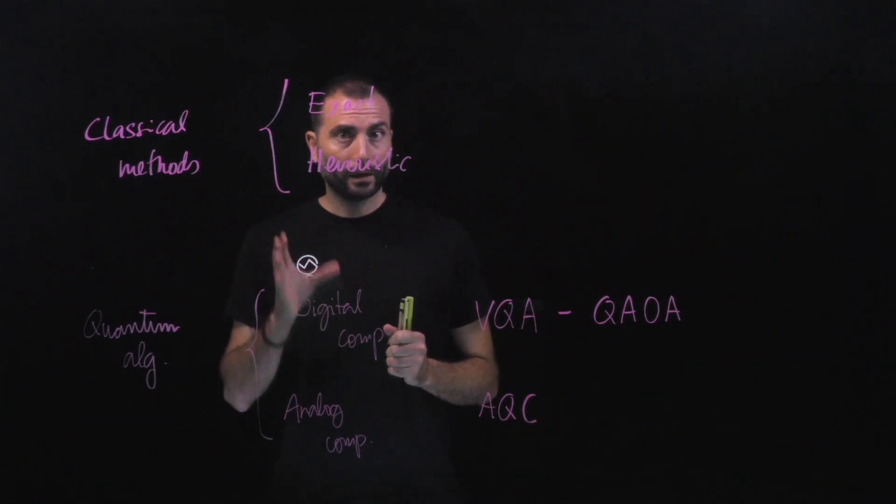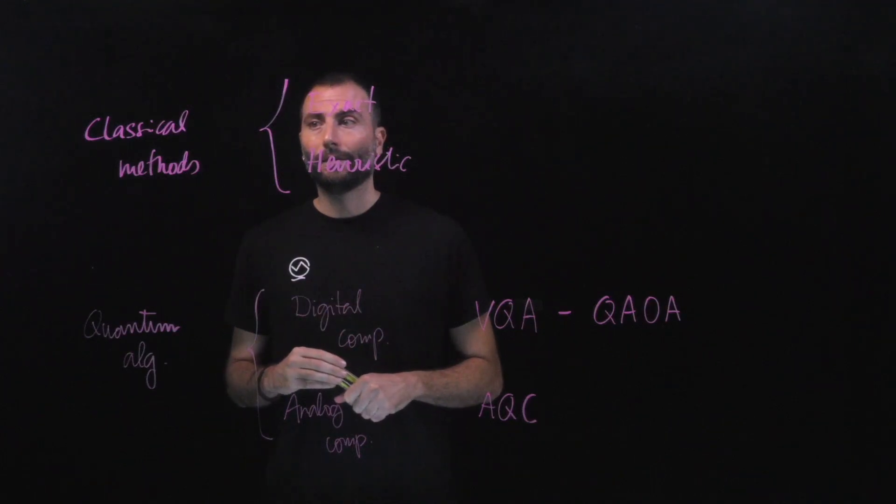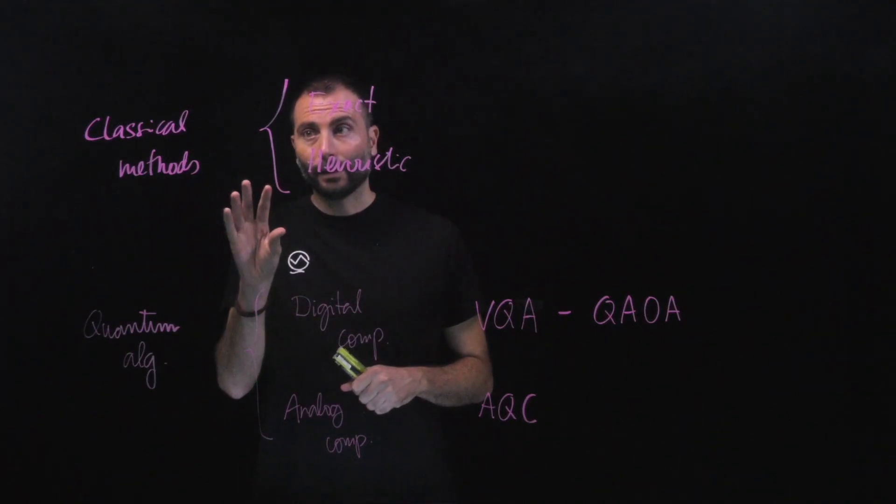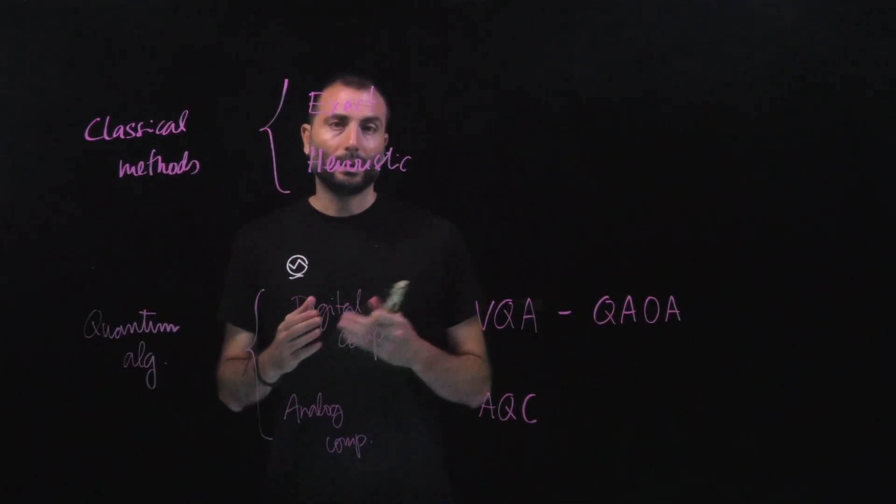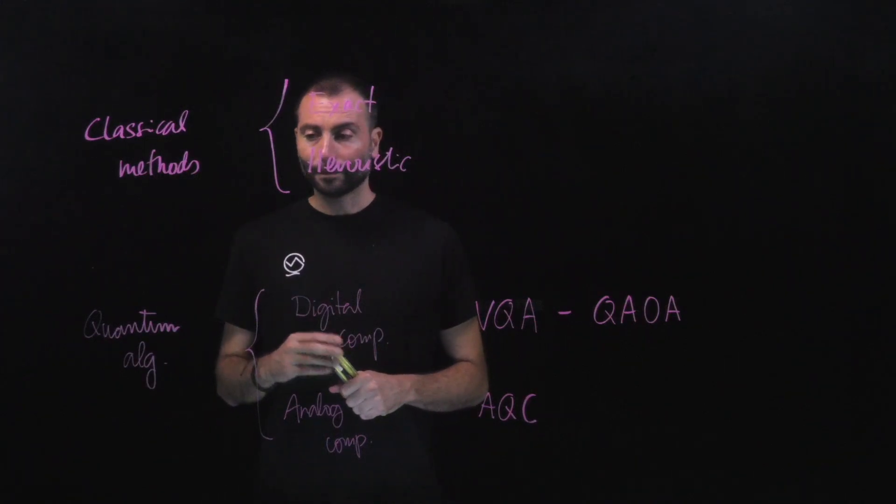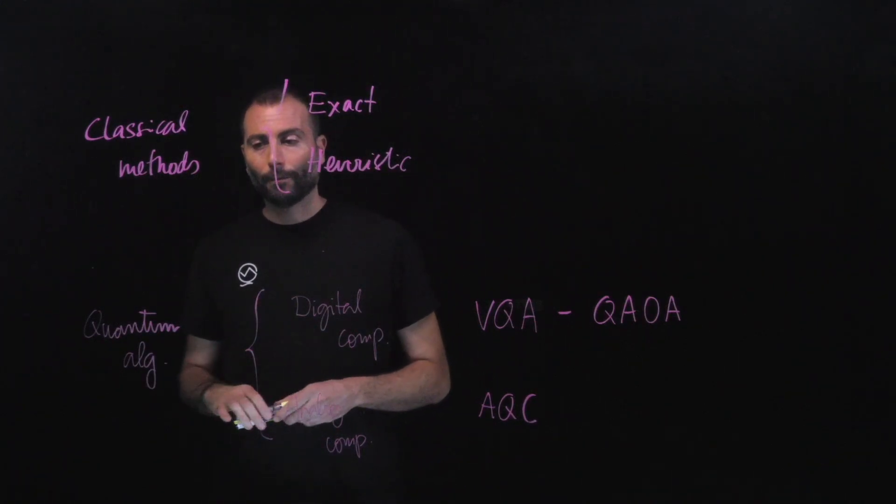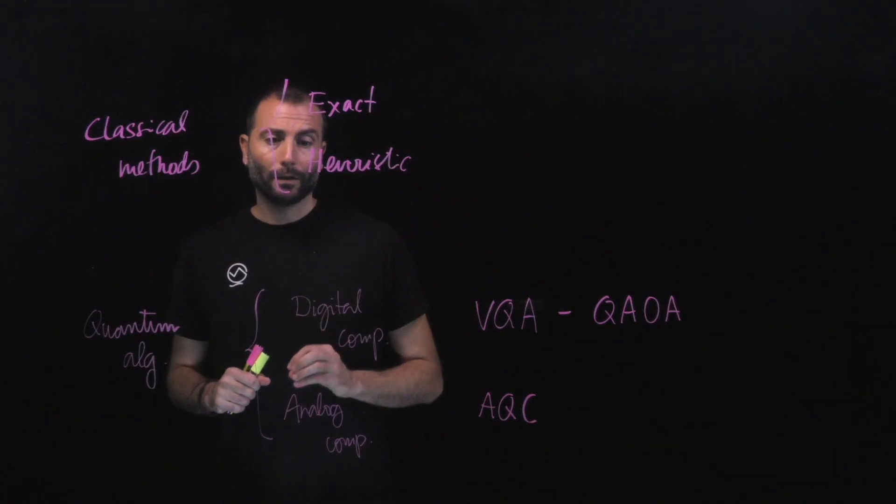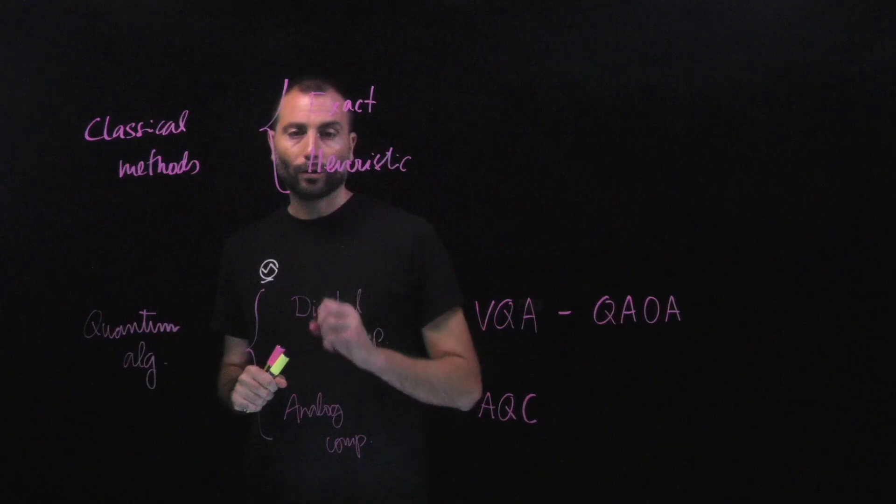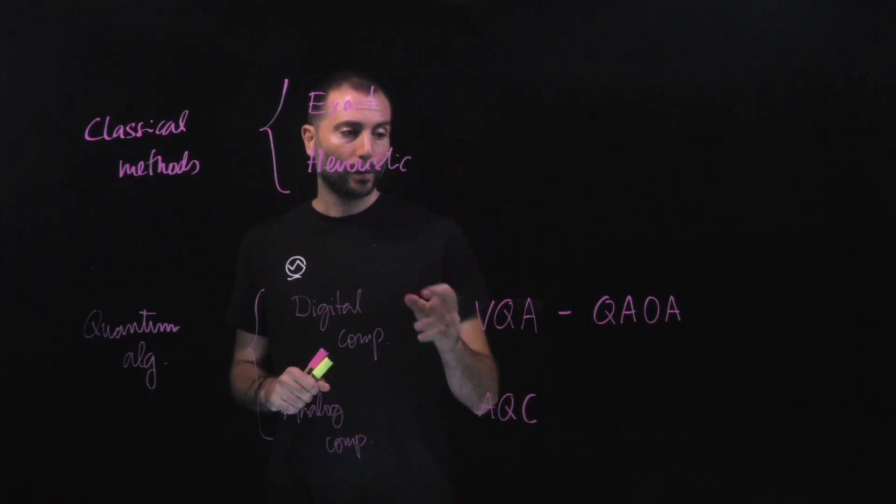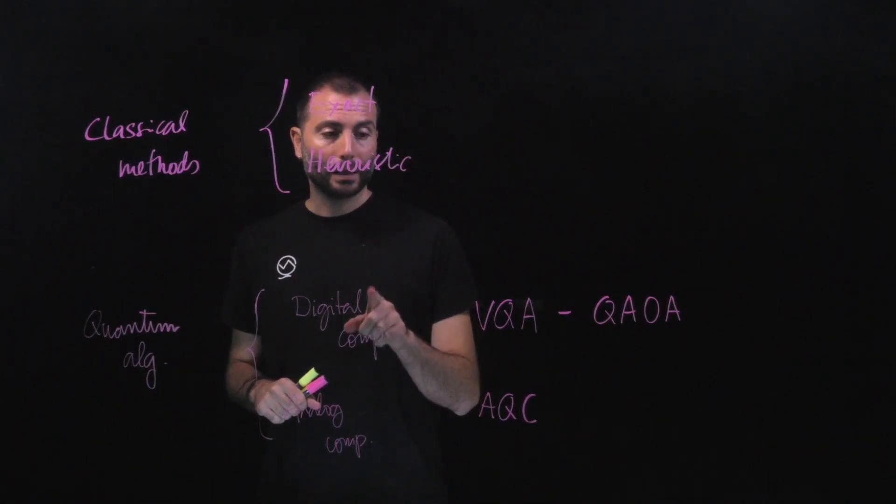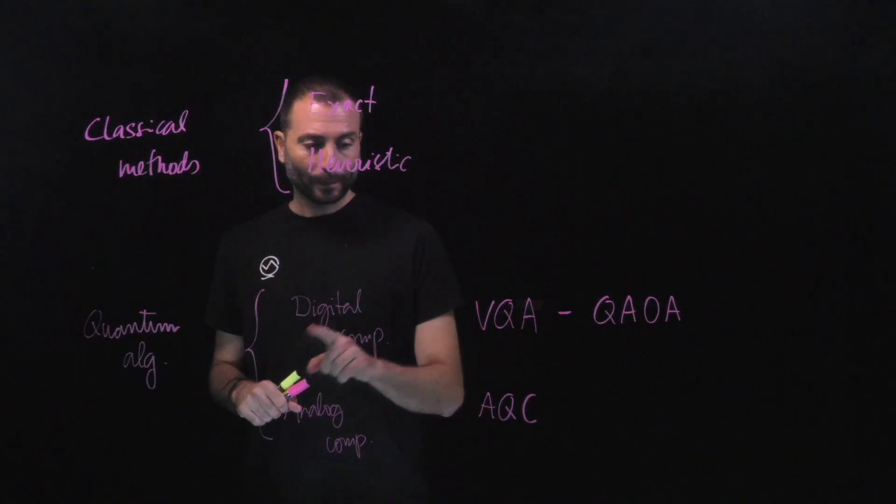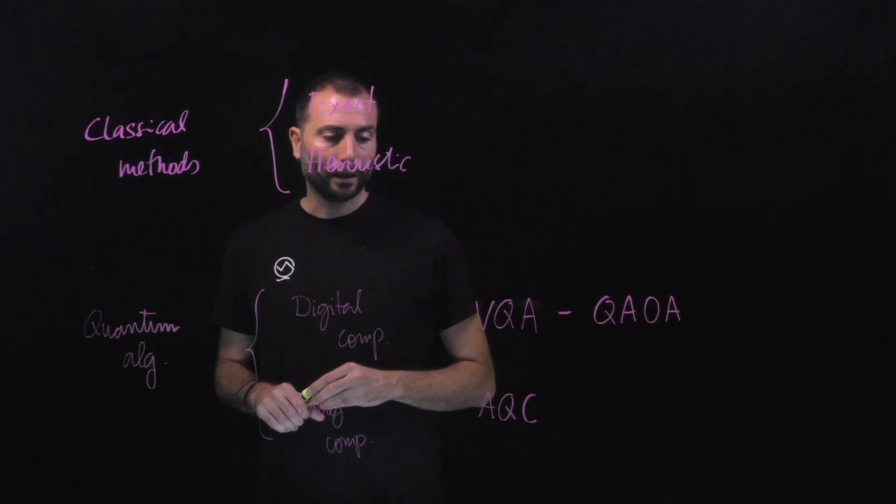We'll have three approaches, three strategies. One will be to review the classical methods. It will be a very short overview just to design and explain what are the most popular exact and heuristic approaches. Concerning the quantum computation part, we will focus on these two computation paradigms: the digital computation, where we will explain the VQA and the QAOA. This will be made in lectures six and seven. In lecture five, we will present a summary of how to solve the QUBO problem with adiabatic quantum computation.